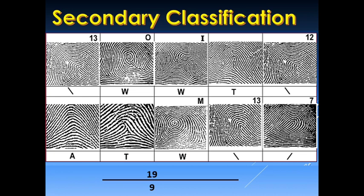Here is another example under secondary classification. The first step is to identify the capital letter group using the two index fingers. In this example we have a whorl and a tented arch. Since it is a whorl pattern, we identify whether it is a plain whorl, central pocket loop whorl, double loop whorl, or accidental whorl. In this example it is a central pocket loop whorl, so we put capital letter C over T for tented arch. This is why some practitioners apply the ATRO CDX symbols during the blocking out — so that during secondary classification they simply copy the letters.